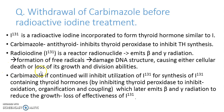Now, what happens when we give carbimazole? Carbimazole inhibits thyroid hormone synthesis by inhibiting thyroid peroxidase. When thyroid peroxidase is inhibited, I-131 cannot be utilized for the formation of thyroid hormone because the enzyme is already inhibited. Since it cannot be utilized for thyroid hormone formation, it cannot get inside the cell, and thus will not emit the beta and gamma radiation necessary for its therapeutic action. That is why carbimazole should be withdrawn before radioactive iodine treatment is executed.